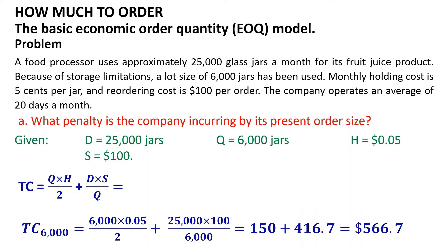Substituting the given values: TC(6000) equals 6,000 multiplied by 0.05 divided by 2, plus 25,000 multiplied by 100 divided by 6,000, which equals 150 plus 416.7, equals $566.70.